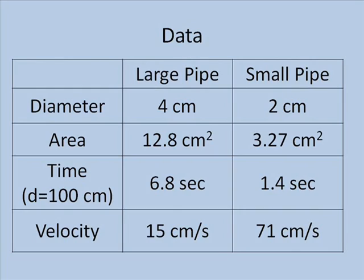Now let's look at some numerical data we collected using this apparatus. The 1½ inch pipe has a diameter of 4 centimeters. This means the cross-sectional area is 12.8 square centimeters. When we measured the amount of time that it took for the red marker ball to move 100 centimeters through this pipe, it required 6.8 seconds on average, or it was moving at 15 centimeters per second.